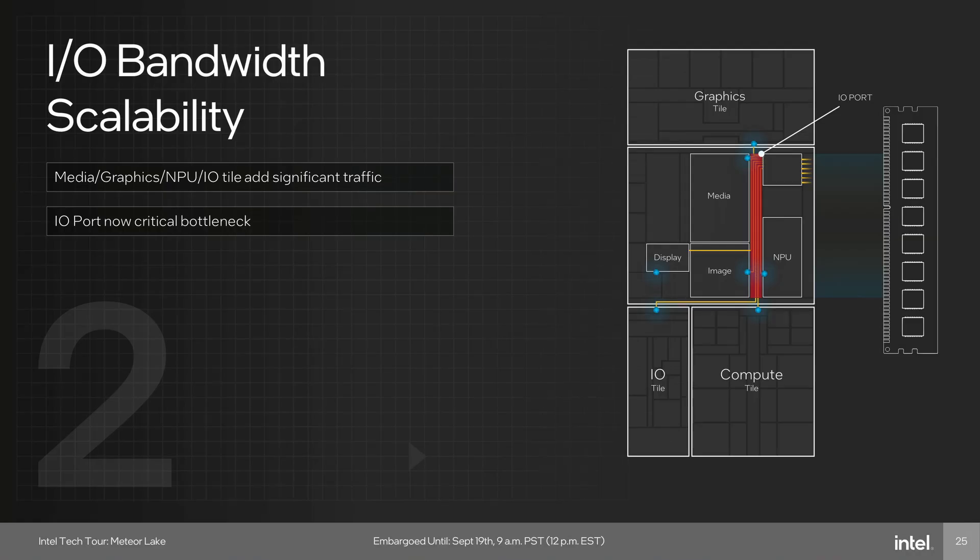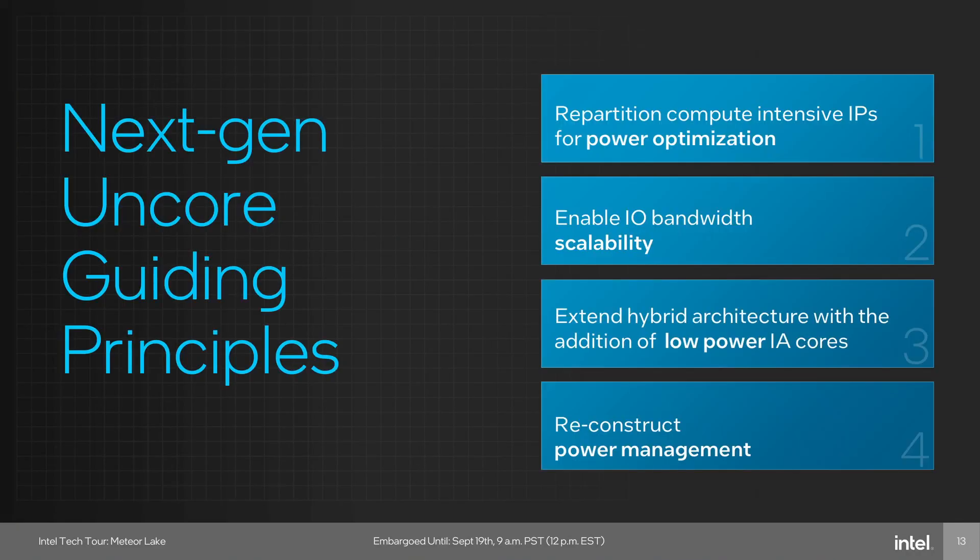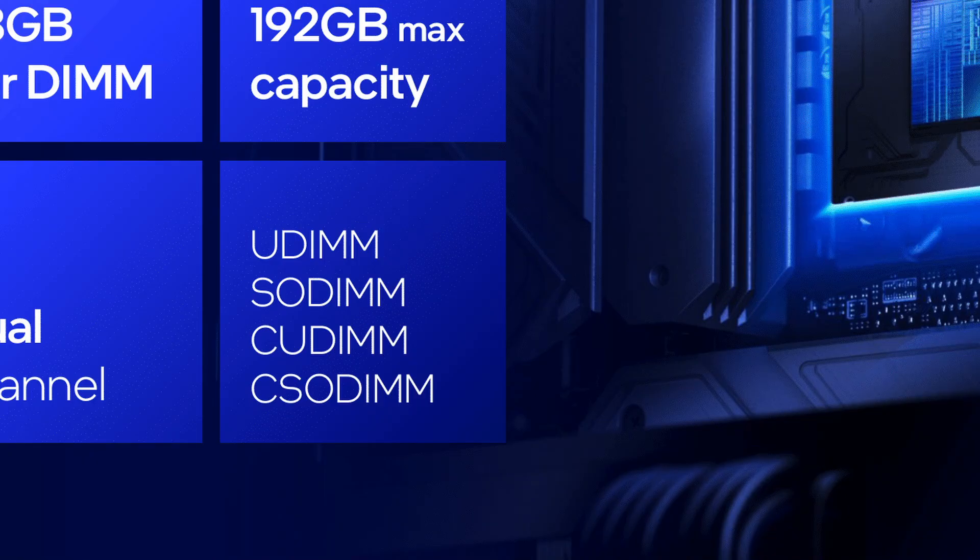The subsystem connects to the network on chip, NOC, which is part of the next generation UnCore NGU, located on the SOC tile. DDR overclocking on Arrow Lake is not substantially different compared to Raptor Lake. However, there's a little bit more overclocking headroom, and of course it supports CU-DIMM.